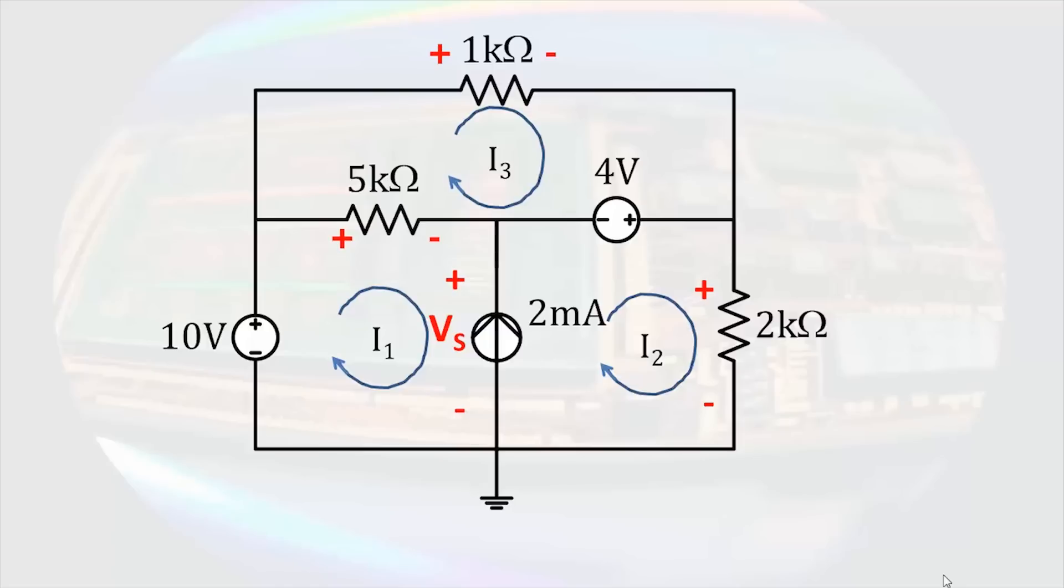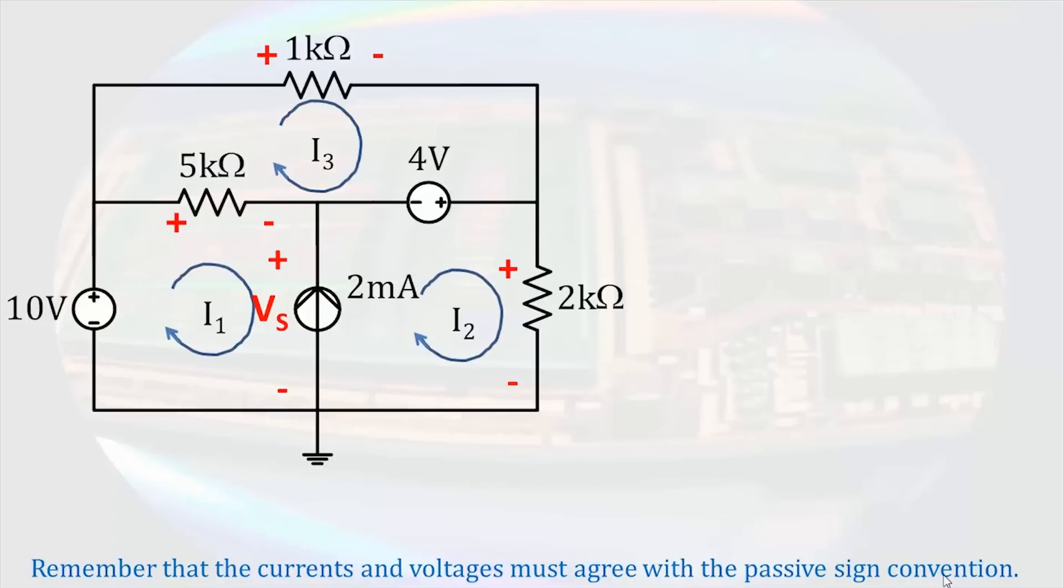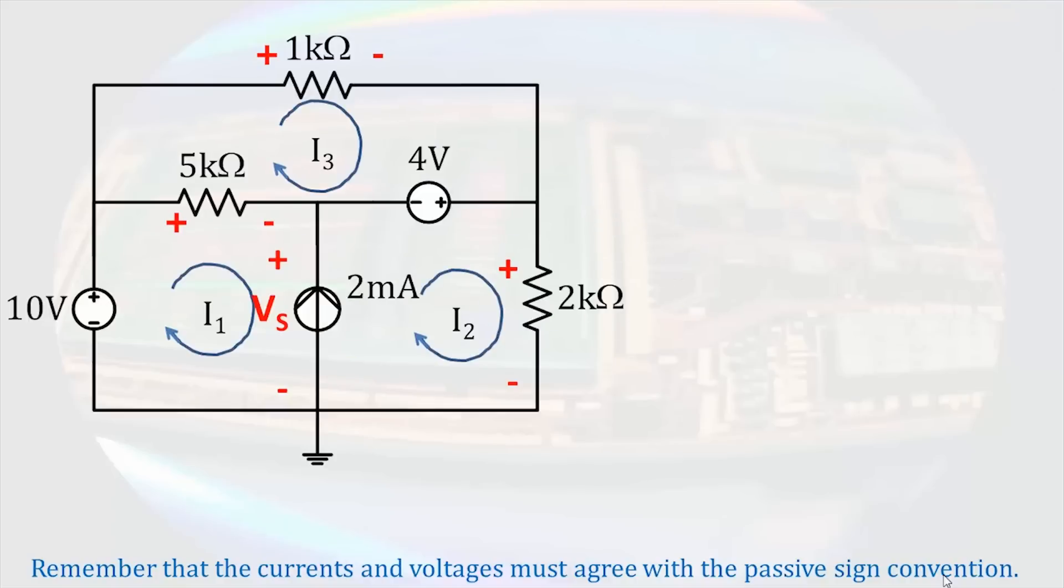Let's assign a polarity to use for each of the remaining undefined voltages. We'll then proceed by writing KVL equations for each of the three loops. Going around loop 1, starting in the lower left-hand corner and proceeding in the direction of the arrow, we have an increase of 10 volts, a decrease of 5 kilo ohms times I1 minus I3, and a decrease of the source voltage. This is a complete loop, so the sum of the voltages must be equal to zero.